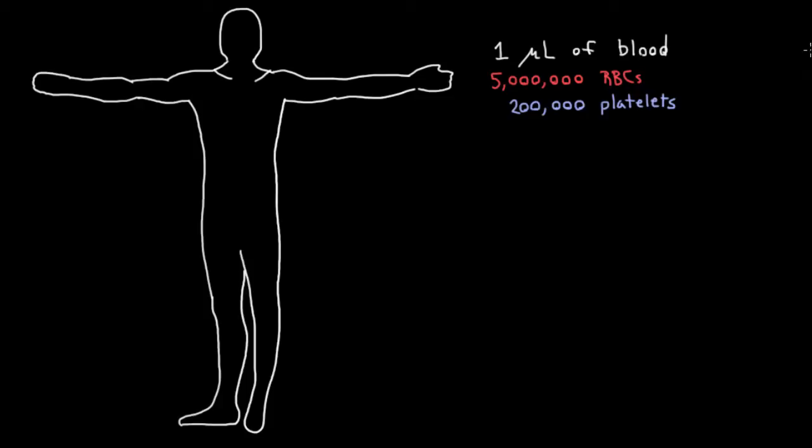And actually, it turns out that red blood cells last about 120 days on average. That's about four months. And platelets, meanwhile, only last a couple of days, so a lot less than the red blood cells.